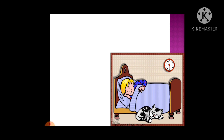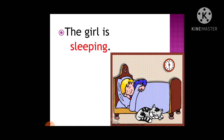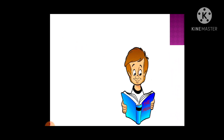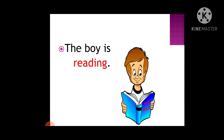Let's see another picture. What is the girl and the boy doing? The girl is sleeping. Sleeping is highlighted in red because this is the action of the girl. Now what is the boy doing? He is reading. The boy is reading — reading is highlighted in red. So reading is the action word.